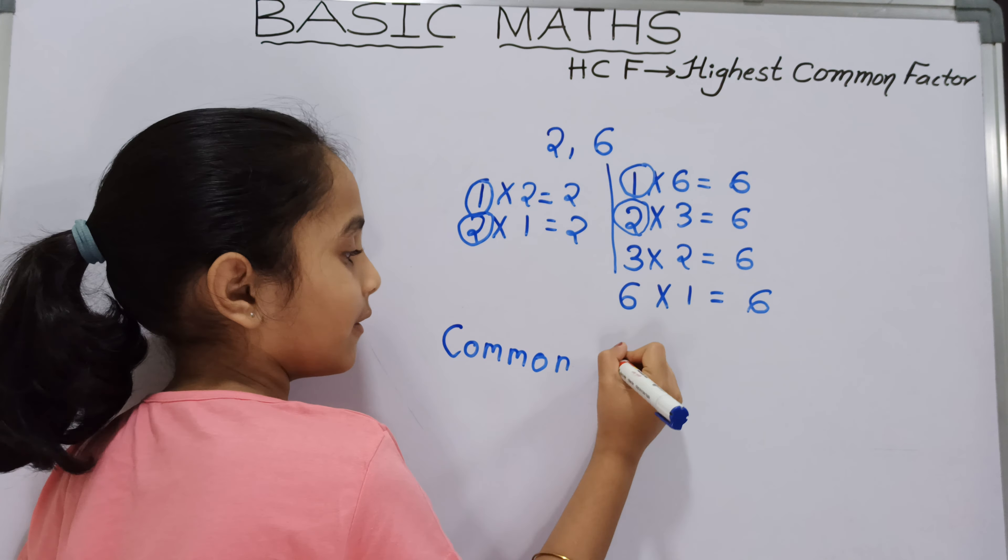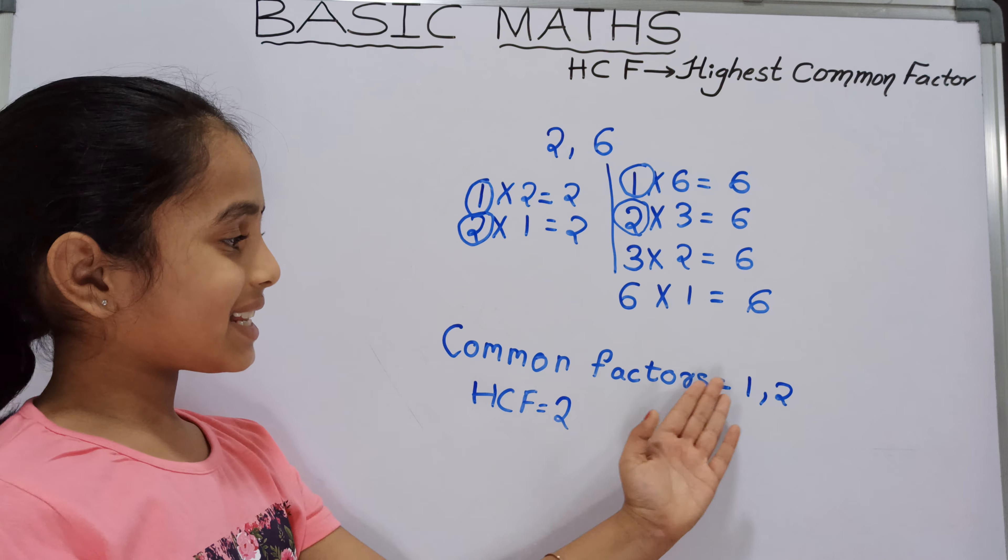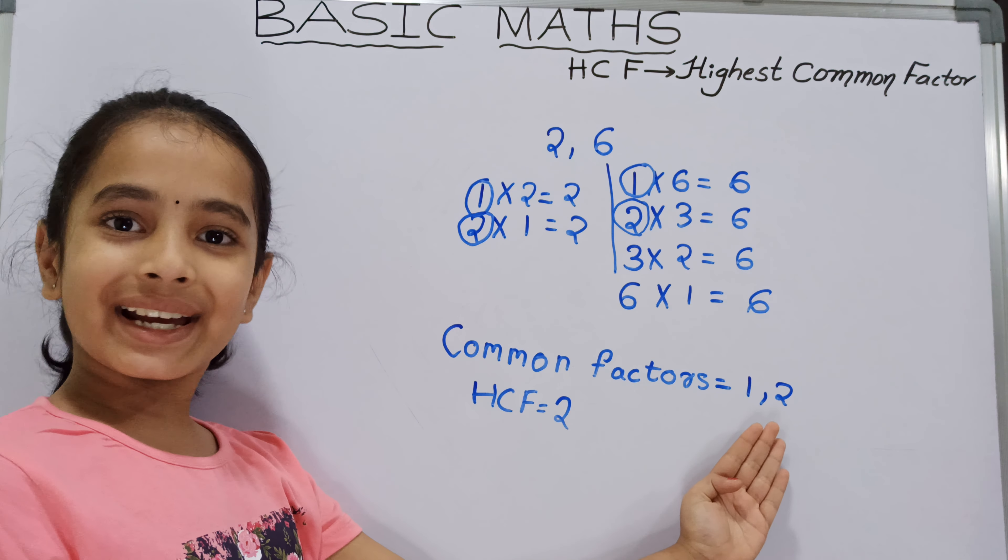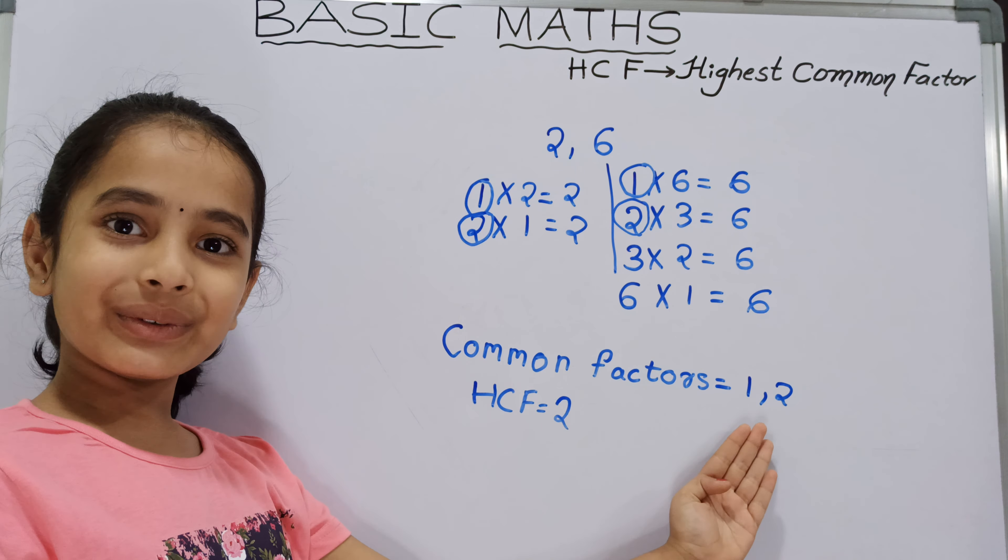So HCF is 2 because among the common factors 1 and 2, the highest number is 2. Now we will learn a small trick to solve HCF and LCM for particular numbers.